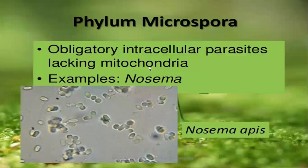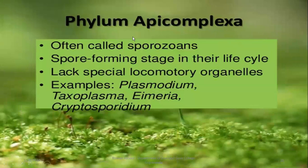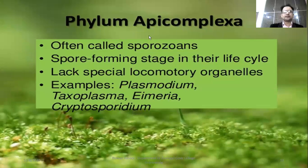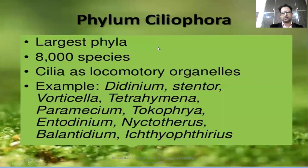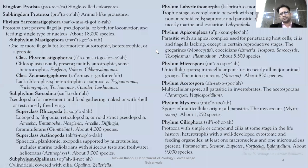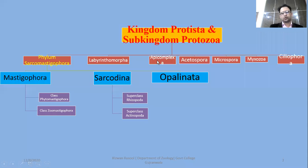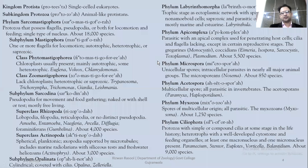We will discuss the example of Nosema bombycis. Phylum Apicomplexa includes Plasmodium and Toxoplasma — we will discuss the parasitic types in detail. Ciliophora is the largest phylum in Sub-Kingdom Protozoa, with cilia as locomotory structures. Examples include Didinium, Paramecium, and Stentor. That was all about the introductory overview of Protozoan taxonomy with reference to their 7 phyla. The rest of the details, phylum by phylum, will be discussed inshallah.